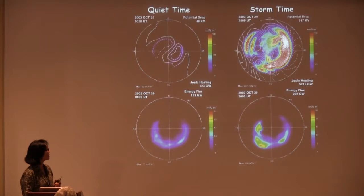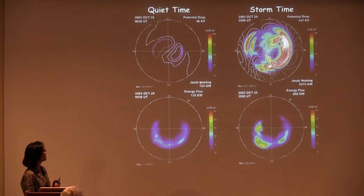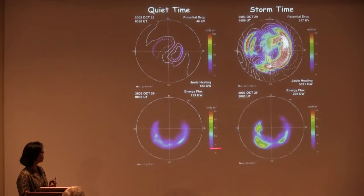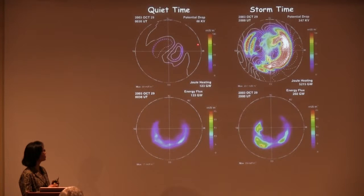Here's a map showing how the intensification looked during the storm versus during quiet time. These are colors of the height-integrated Joule heating dissipation, with contours of the plasma convection pattern during quiet time on October 29th and then during 20 UT at the peak of the second peak of the storm — showing dramatic enhancement of Joule heating dissipation. The bottom panel shows global maps of energy flux carried by the aurora. Note that the color scale for Joule heating goes up to about 100 milliwatts per square meter, and those for energetic particles are about a quarter of that.